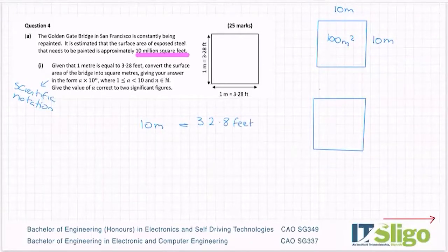So I got 10 multiplied by 3.28. So I'm getting 32.8 feet. So 32.8 feet by 32.8 feet. And I want to get the area of that. So 32.8 by 32.8 is 1075.84 feet squared.